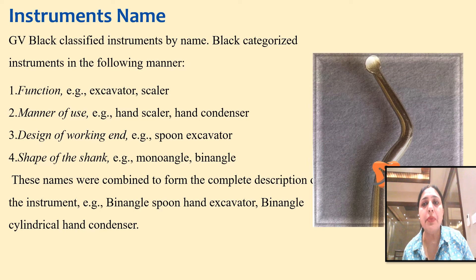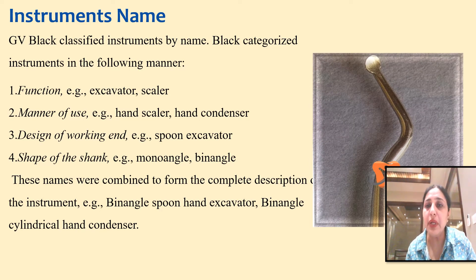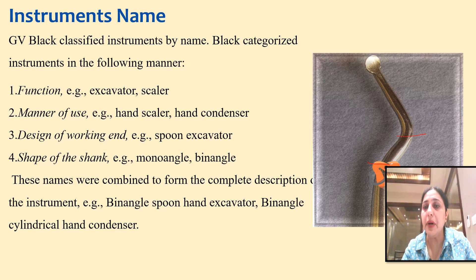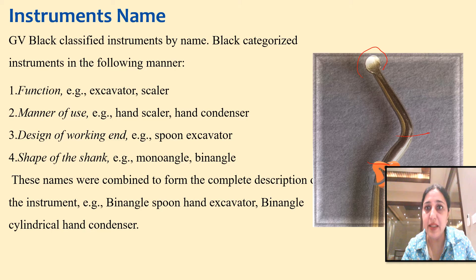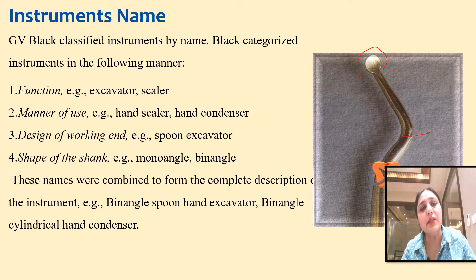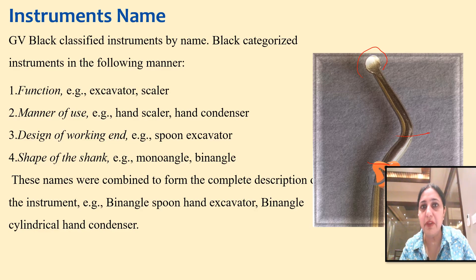For example, this instrument is a binangle spoon hand excavator. That means the shank has two angles — it is binangle — the working end is spoon-shaped, it is used with the help of a hand, and it performs the function of excavating caries. Similarly, you can have a binangle cylindrical hand condenser. This is the instrument name system given by G.B. Black.